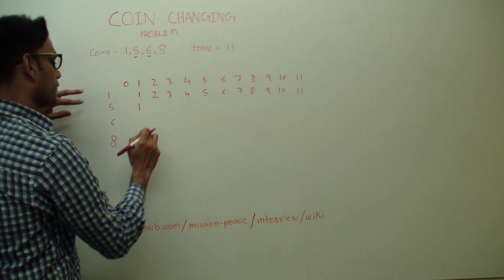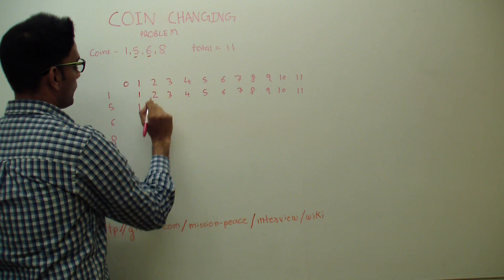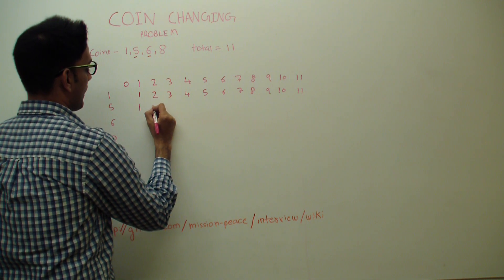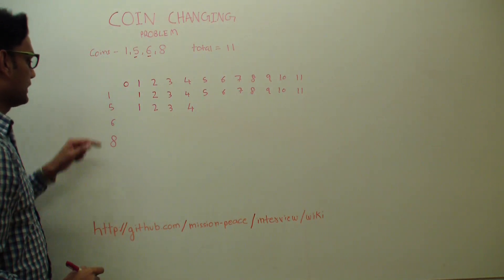When the total is 2 and we have coins 1 and 5, is 5 going to play any role? No. So value is coming from the top. Similarly, 3 and 4. Alright, let's look at 5.